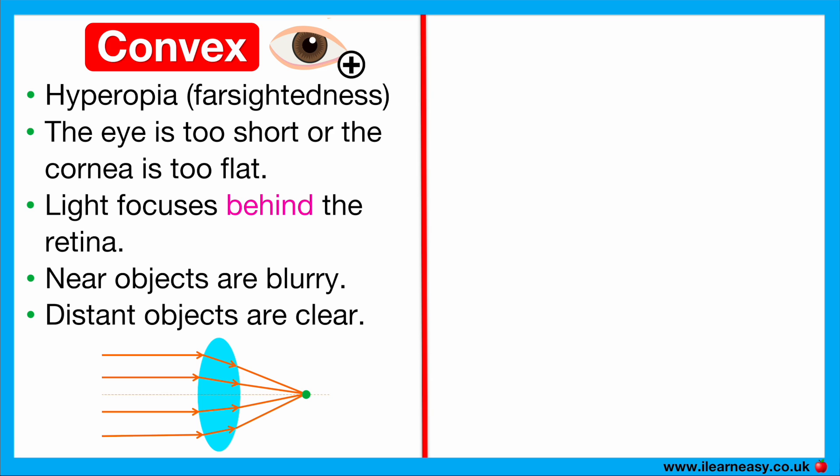Convex lenses are thicker in the centre and thinner at the edges. They converge light rays, meaning they bend the light rays together. As a result, the focal point moves forward so it lands on the retina instead of behind it. Without correction, light focuses behind the retina, so close-up objects appear blurry.